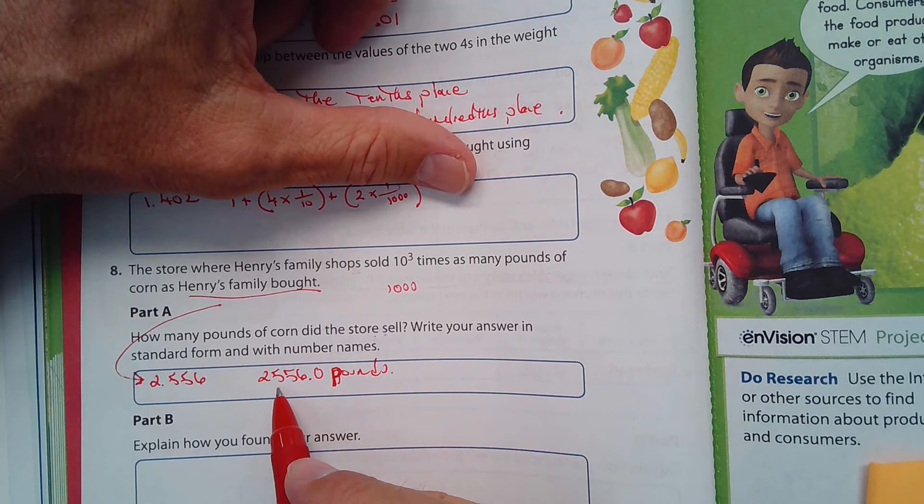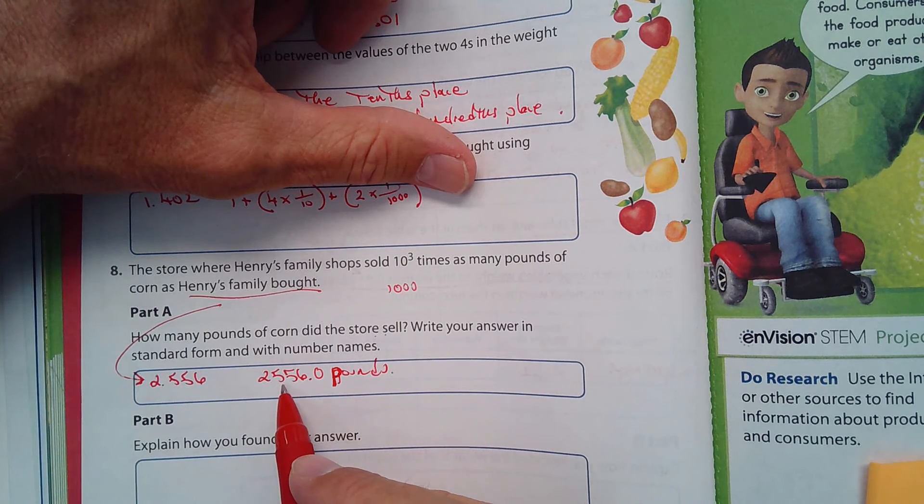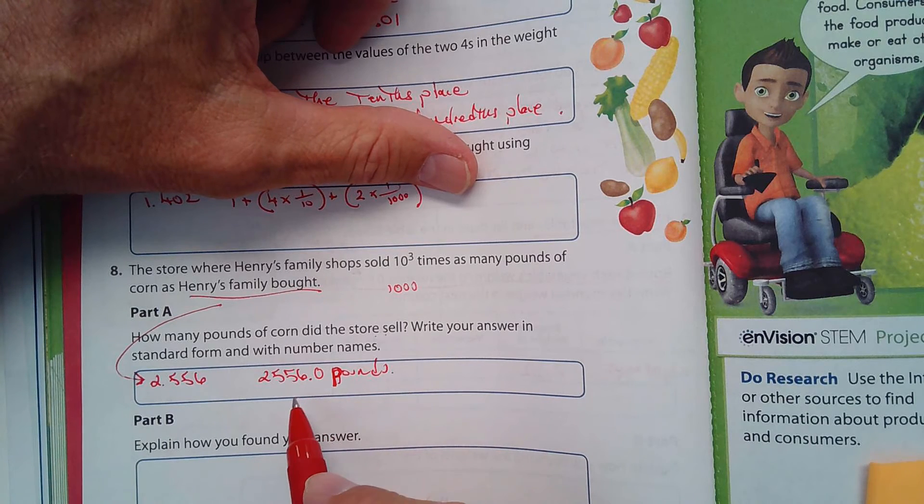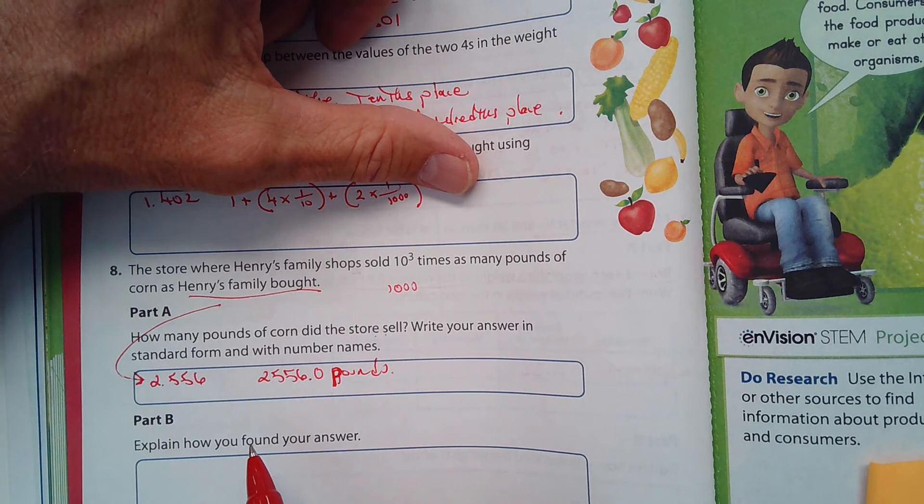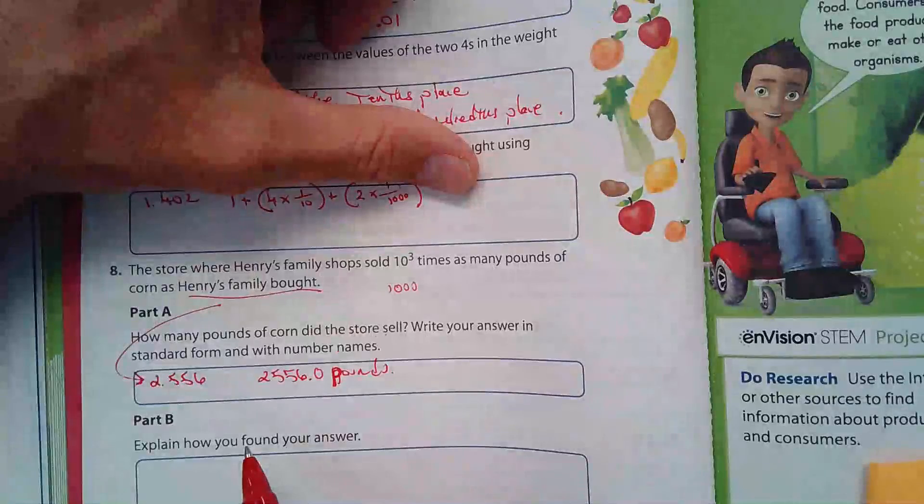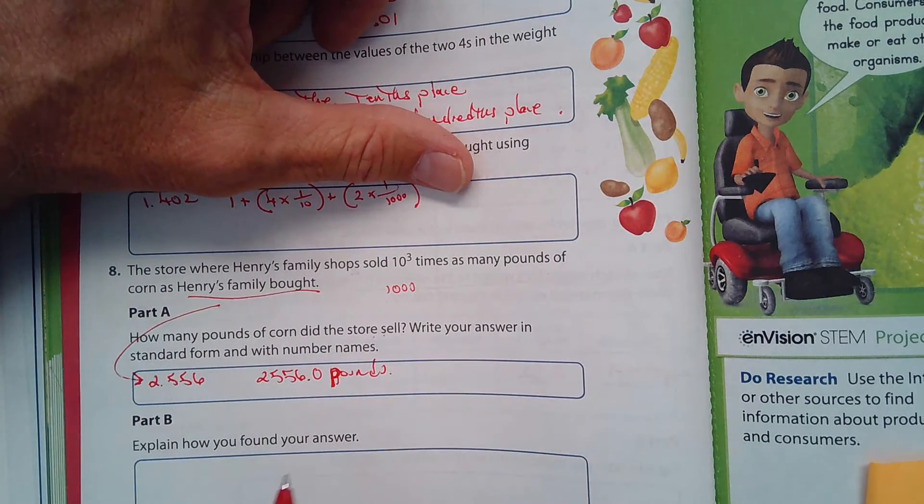So with number names, it'd be 2,556. And again, I'm not going to write that down, I'll let you guys do that.